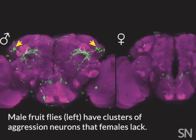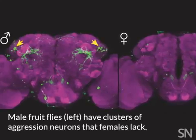In fact, some of the same nerve cells that drive mice to fight might also drive them to mate.